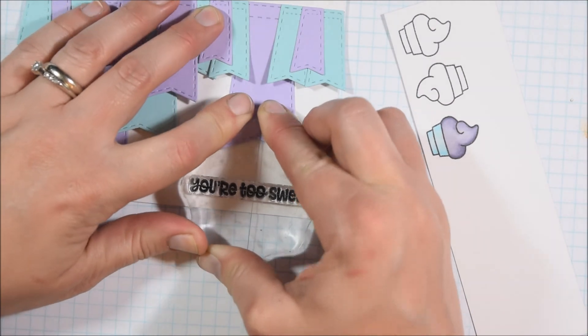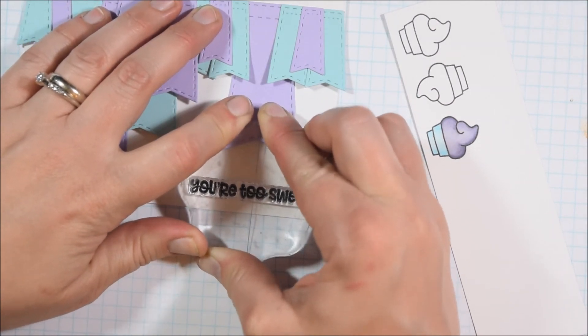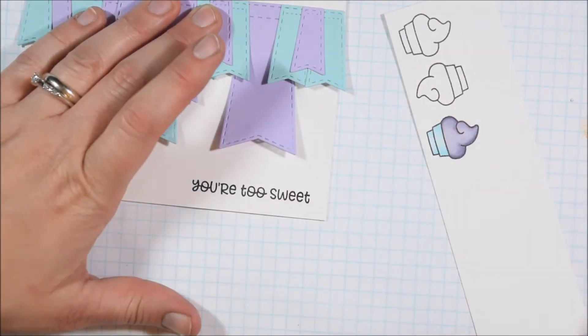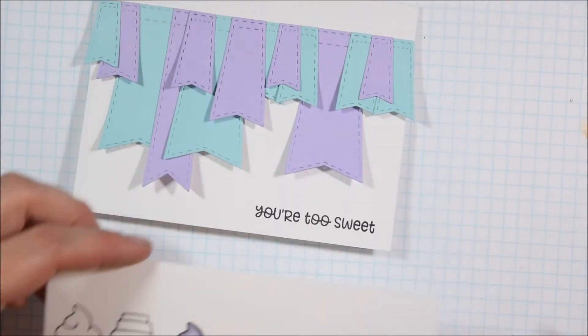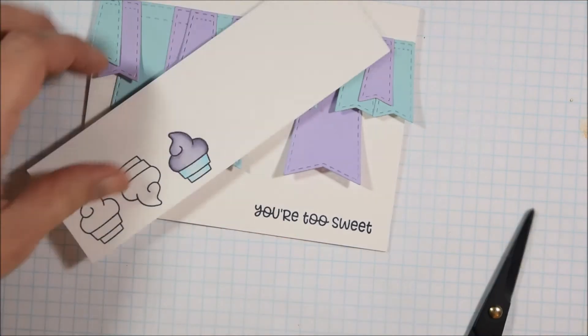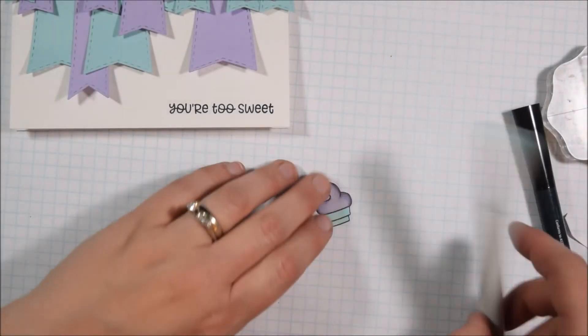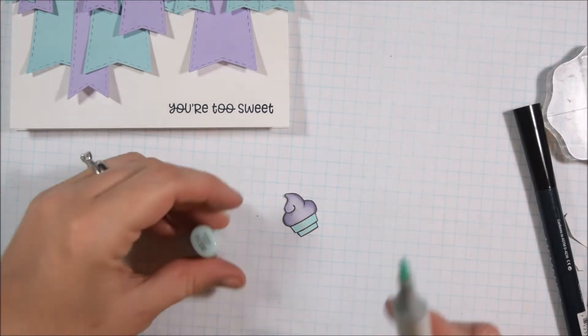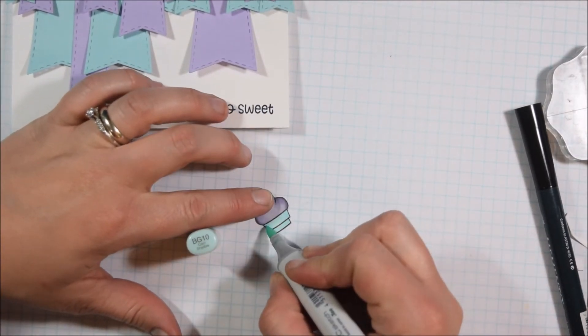I'm going to use VersaFine ink to stamp my sentiment. VersaFine ink gives a pretty good impression consistently the first time, especially on stamps that have been used before, so I felt pretty confident stamping right onto my card base with it. I knew if I made a small mistake I would be able to fill it in with a black pen like the Memento marker that you see off to the side there.